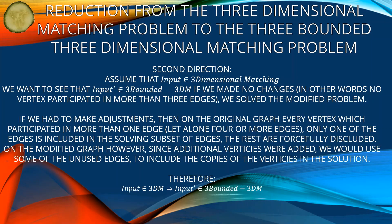Second direction: Assume that input is in 3-dimensional matching. We want to show that input prime is in 3-bounded 3DM. If we made no changes — in other words, no vertex participated in more than 3 edges — we already solved the modified problem. If we had to make adjustments, then on the original graph every vertex which participated in more than one edge, including 4 or more edges, only one of those edges is included in the solving subset of edges; the rest are fully excluded. On the modified graph, however, since additional vertices were added, we would use some of the unused edges to include the copies of the vertices in the solution.